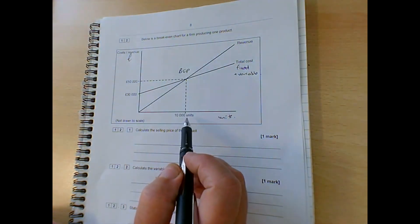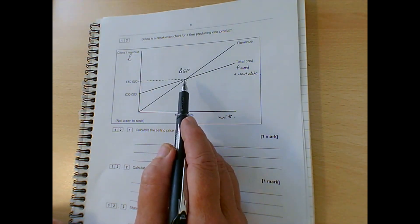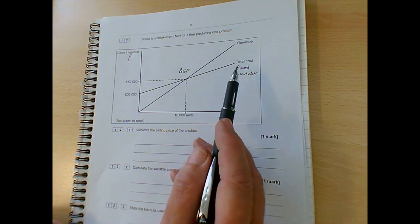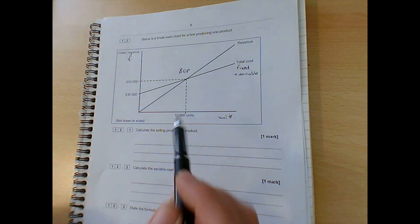So we can see that this business breaks even at 10,000 units. Remember that the breakeven point is the point at which the total revenue and the total cost, the fixed plus the variable, are the same. Neither a profit nor a loss is made.